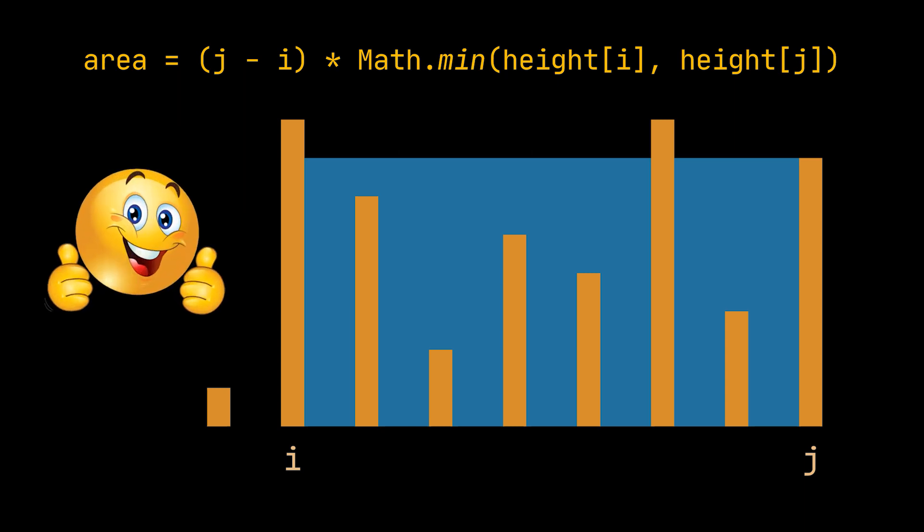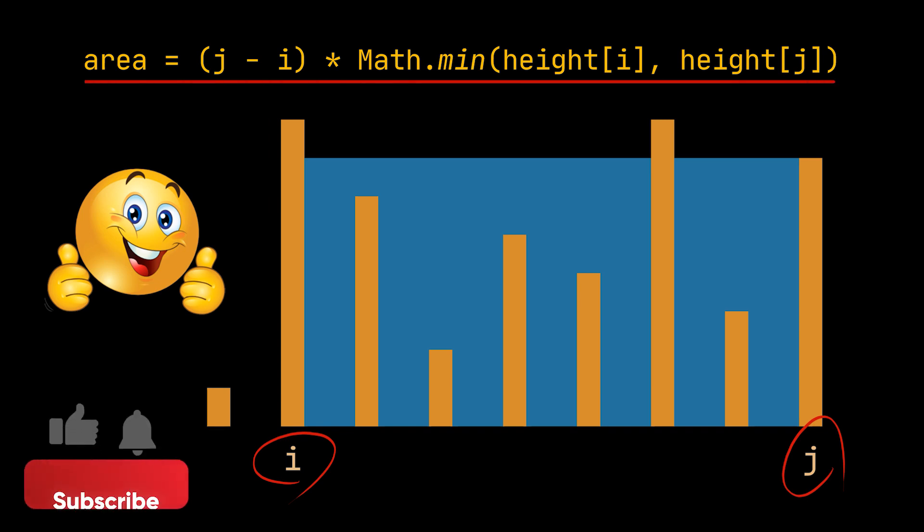Okay, until now all we did was understand and lay out the definition as provided to us. But the solution to this problem is basically finding the i and j variables such that the area we are calculating is maximized. So this equation needs to be maximized and the variables that we have are i and j.